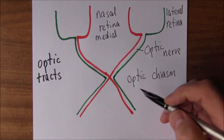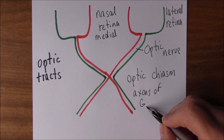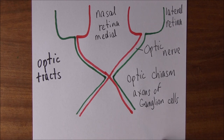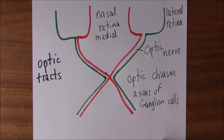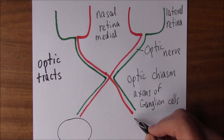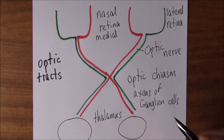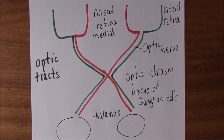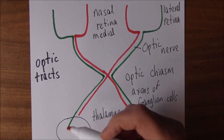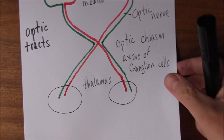All of these axons are the axons of the ganglion cells carrying this information back into the brain. Next, these fibers go into the thalamus — the universal kind of junction box of the brain. There are two thalamic nuclei, the right and the left. These fibers go into the thalamus and that's where those fibers terminate.